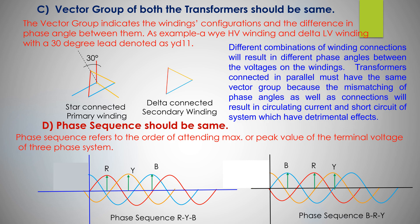In parallel operation, a transformer of RYB phase sequence should not be connected with other transformer having different phase sequence. In that case, short circuit will occur.